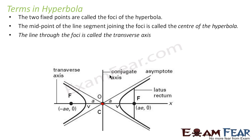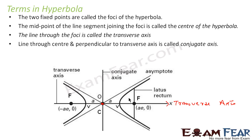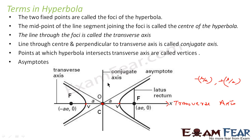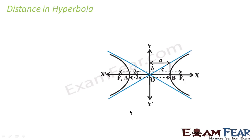The line through the foci is called the transverse axis. The line perpendicular to the transverse axis through the center is called the conjugate axis. The lines called asymptotes have slopes of b/a and −b/a respectively; the equations of the asymptotes are y = b/a and y = −b/a.